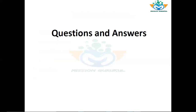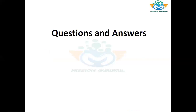Now let's see the questions and answers covered in every lecture. Question number 1: Which MS Excel function returns the largest value among the values passed as arguments? Options: Highest, Largest, Max, More. In MS Excel, if you have a whole column with multiple numbers like 3, 4, 5, 6, 7 and need to find the biggest value, you write the MAX function. So the correct answer is MAX.